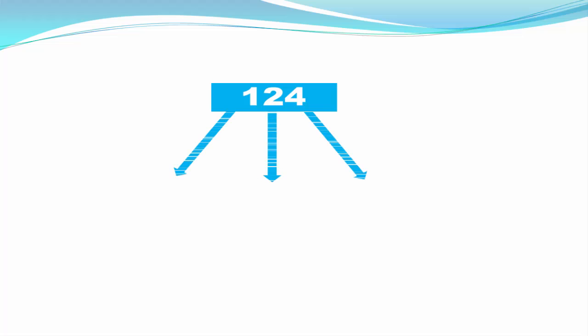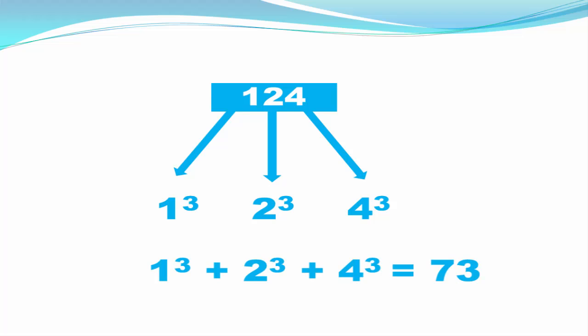To get a clearer idea, let's see another example. Suppose we have the number 124. The first thing we do is separate all the digits and cube them, so we get 1 to the power 3, 2 to the power 3, and 4 to the power 3. Next, add all these numbers and find the sum. The sum is 73, which is not equal to the original number 124, so 124 is not an Armstrong number.